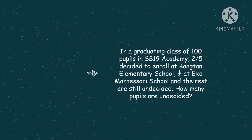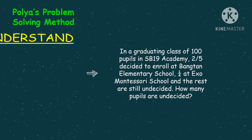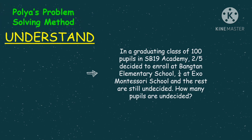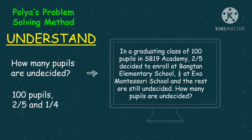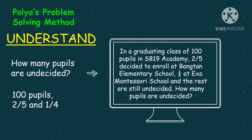Let us solve the problem using Polya's problem-solving method. The first step is to understand the problem: how many pupils are undecided? The given numbers and fractions are 100 pupils, two-fifths decided to enroll at Bangtan Elementary School, and one-fourth at Exo Montessori School.